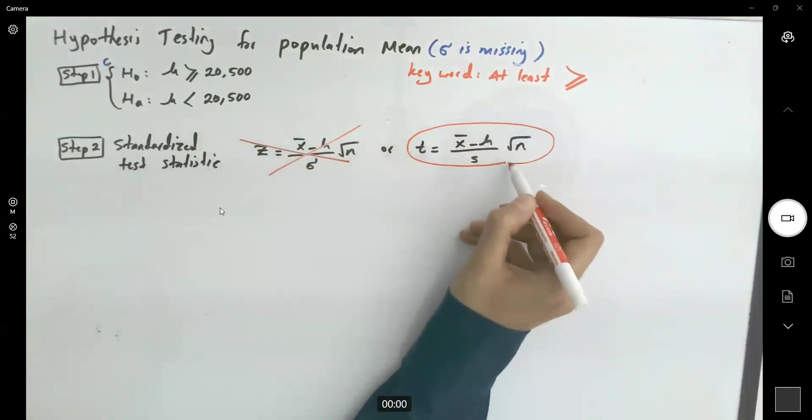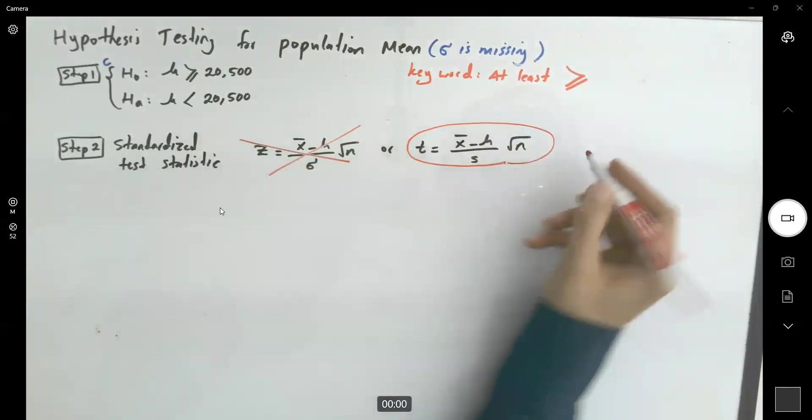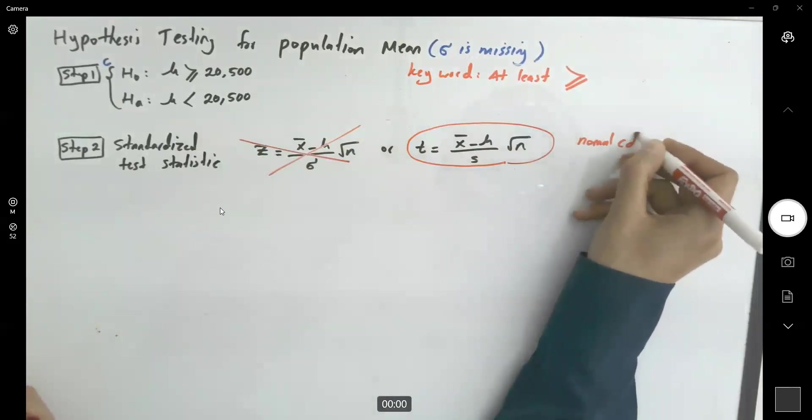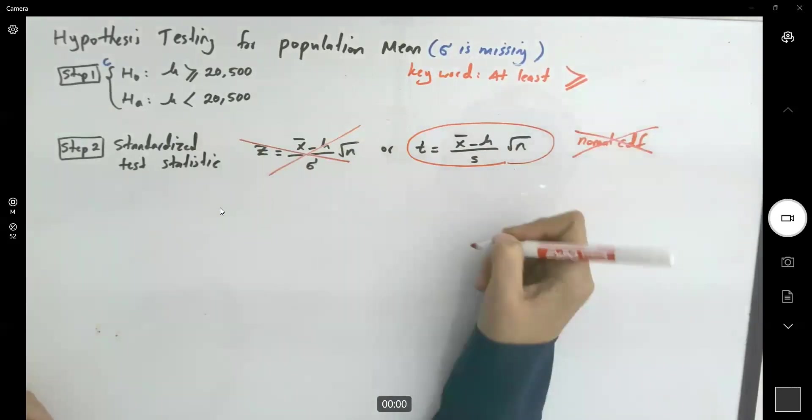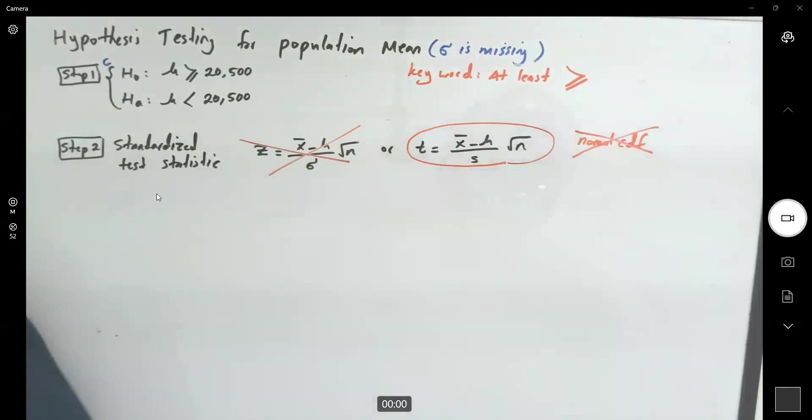So we are not allowed to use z. We need to use t. It means that we are not allowed to use normal cdf. You're going to use a t distribution.